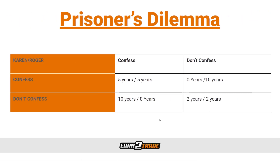Let's talk about some examples, starting with the prisoner's dilemma, which is arguably the most famous game theory scenario. It is a paradox in decision-making analysis in which two people must decide while keeping in mind that the decision of the other can impact their own outcome. Generally, the prisoner's dilemma concludes that two individuals with competing incentives who choose to act in their own self-interest will likely produce a sub-optimal outcome. In this classic example, there are two prisoners — we're going to call them Karen and Roger. They've both been arrested for robbing a jewelry store.